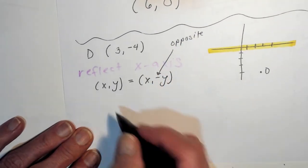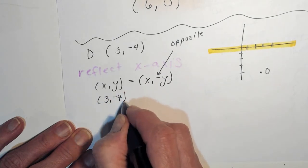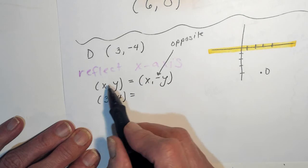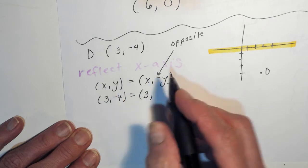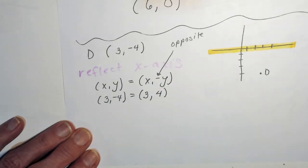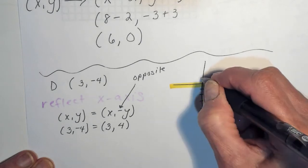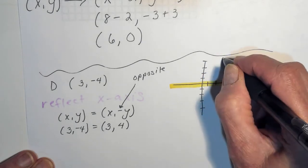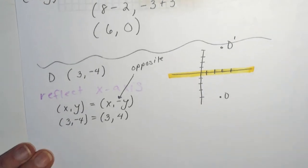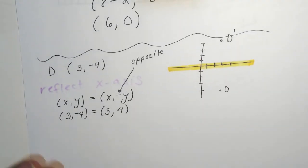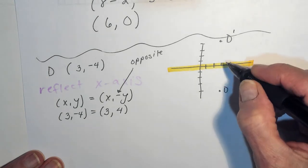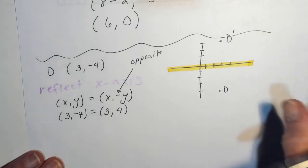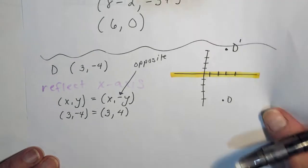Our point is 3, negative 4. Our x stays the same — x is 3. The opposite of y: if y is negative 4, the opposite of negative 4 is positive 4. So D prime is at 3, 4. Some of you don't like to use these formulas and that's fine. You can say: D is 4 below my yellow line, so D prime has to be 4 above my line. And you're absolutely correct.